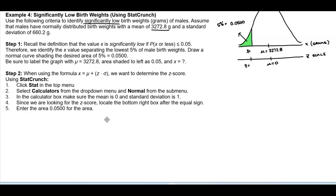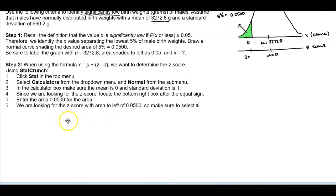And then number four, since we are looking for the Z score we're going to locate the bottom right box after the equal sign. And then we're going to enter the area that we just determined it shaded to be 0.05. And then since we are looking for the Z scores with the area to the left of that value, we want to make sure that we select the inequality that is less than or equal to and then click compute.